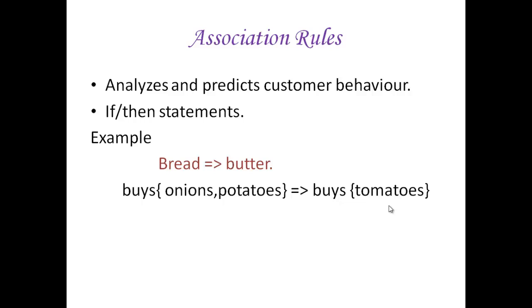Consider another example. In a supermarket, if a customer buys onions and potatoes together, he is likely to buy tomatoes also. Such information can be used as a basis for marketing activities such as product promotion or product pricing.